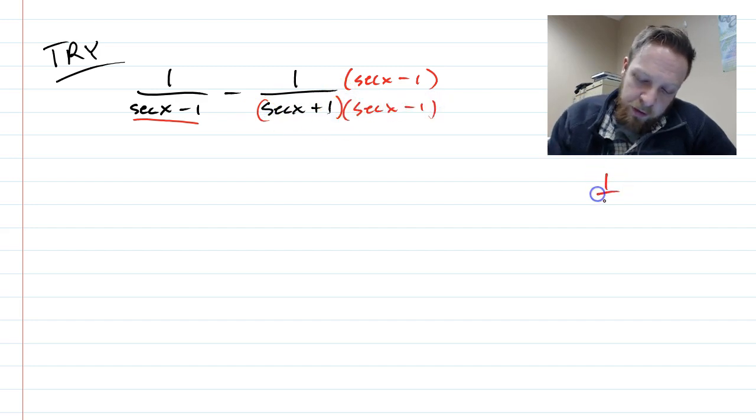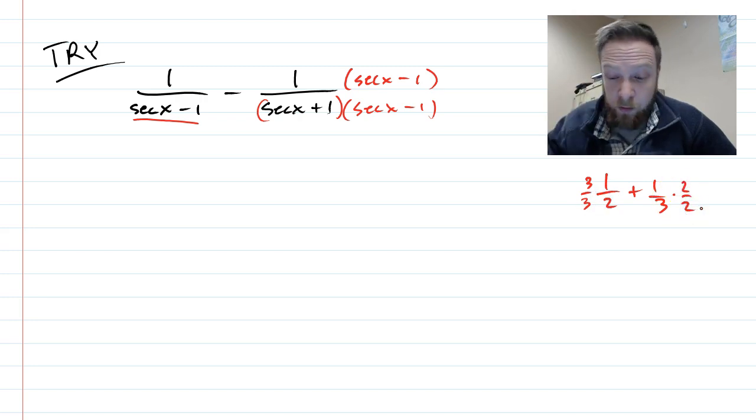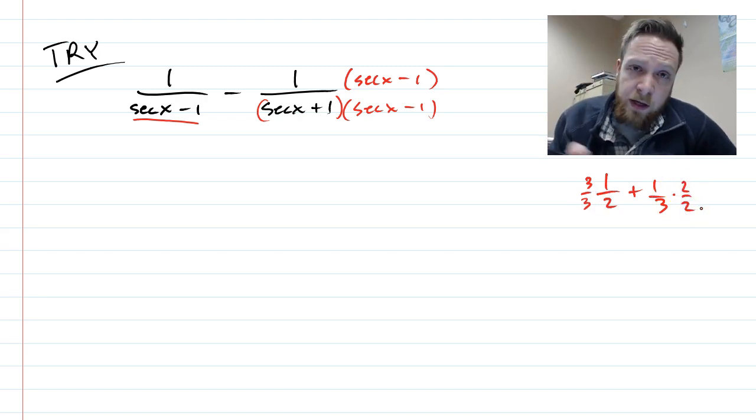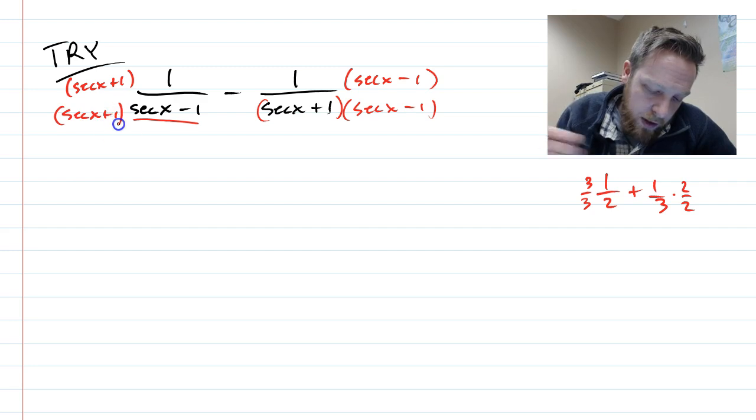It reminds me a lot of when you have one-half plus one-third. One-half plus one-third, you have to do three over three on this side and two over two on this side, and there's no other way to get a common denominator. It's the same here. If we have completely different denominators, you can multiply by the opposite side.